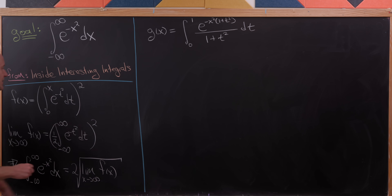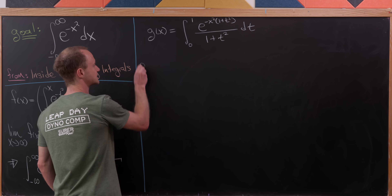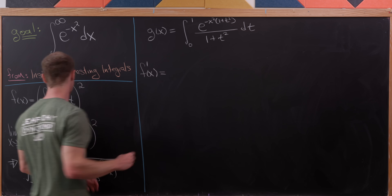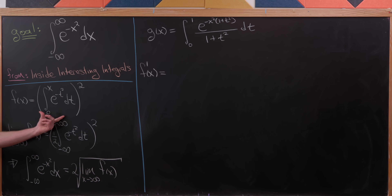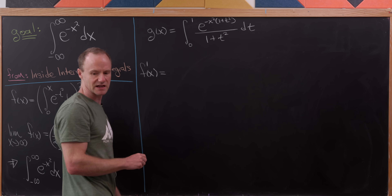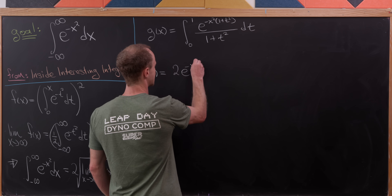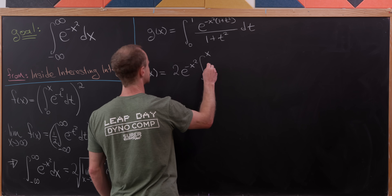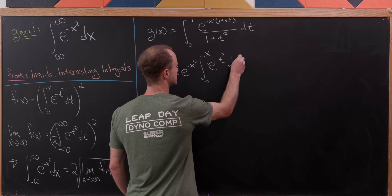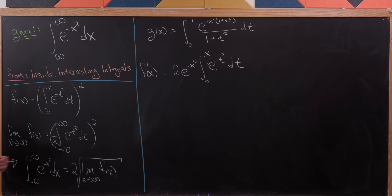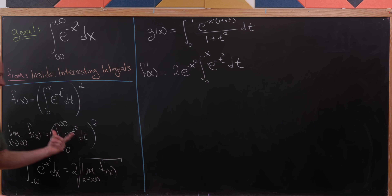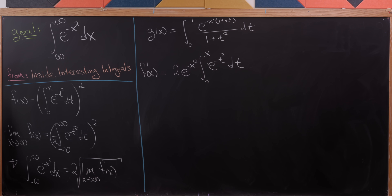Now we're going to take the derivative of both functions. To take f prime, we use both the chain rule — because we're squaring a function — and the fundamental theorem of calculus part 2. That gives us 2 times e to the minus x squared times the integral from 0 to x of e to the minus t squared dt. The 2 comes down from the power rule, and the e to the minus x squared comes from differentiating the inside function.